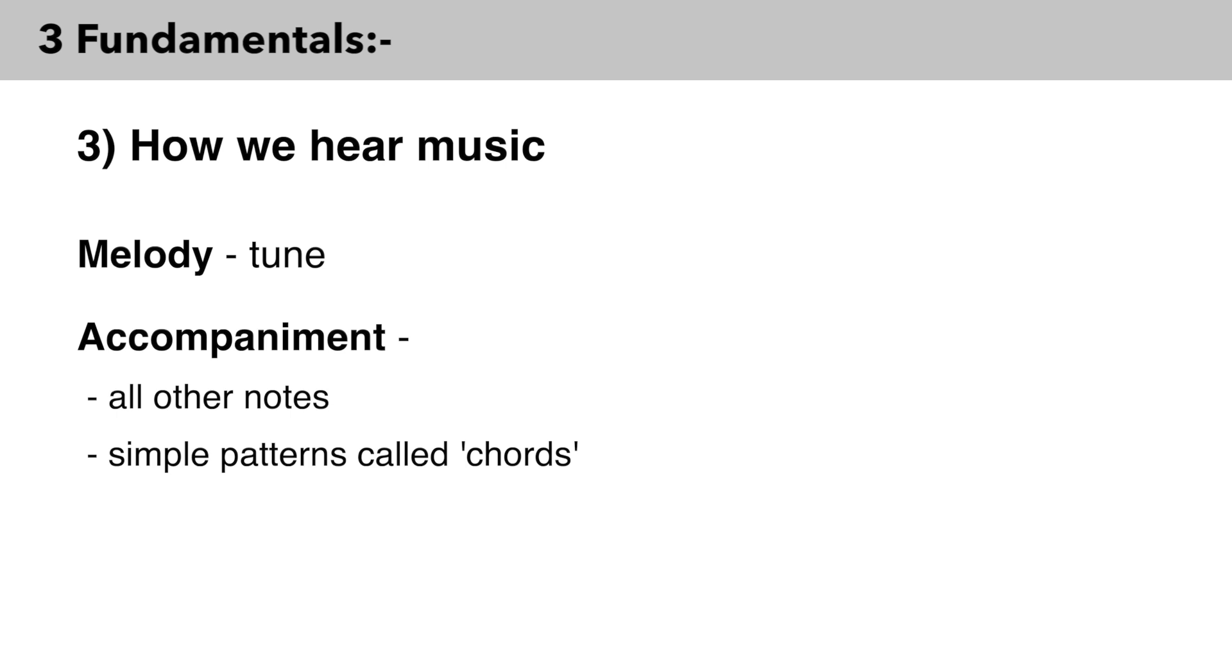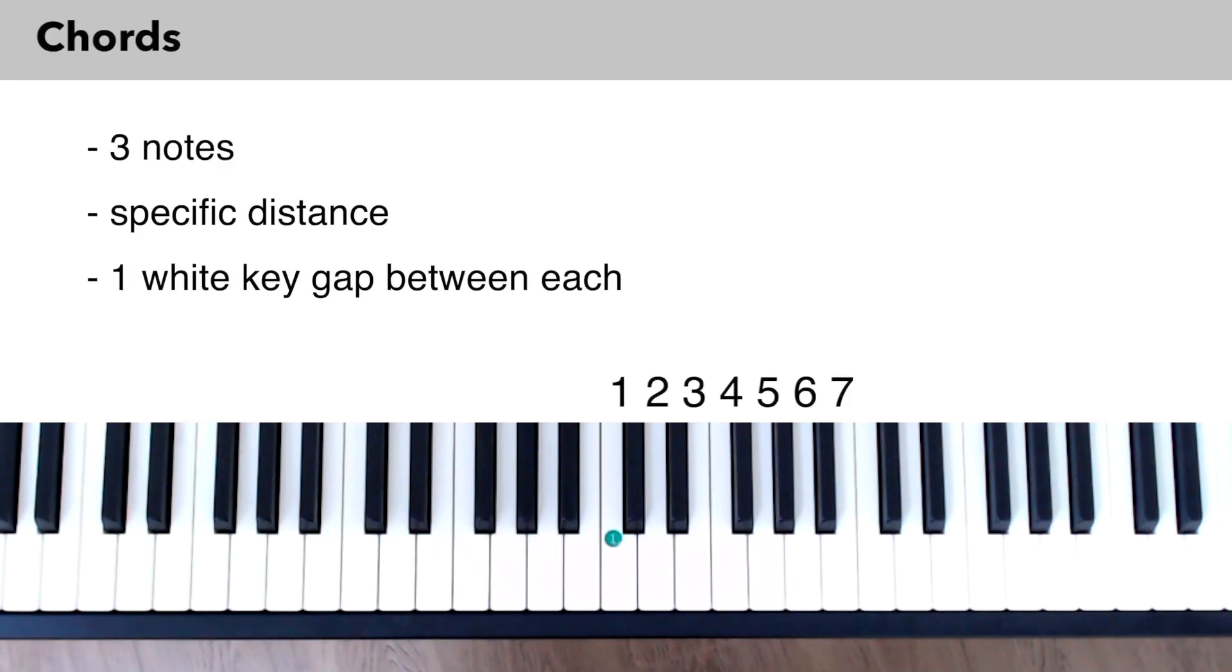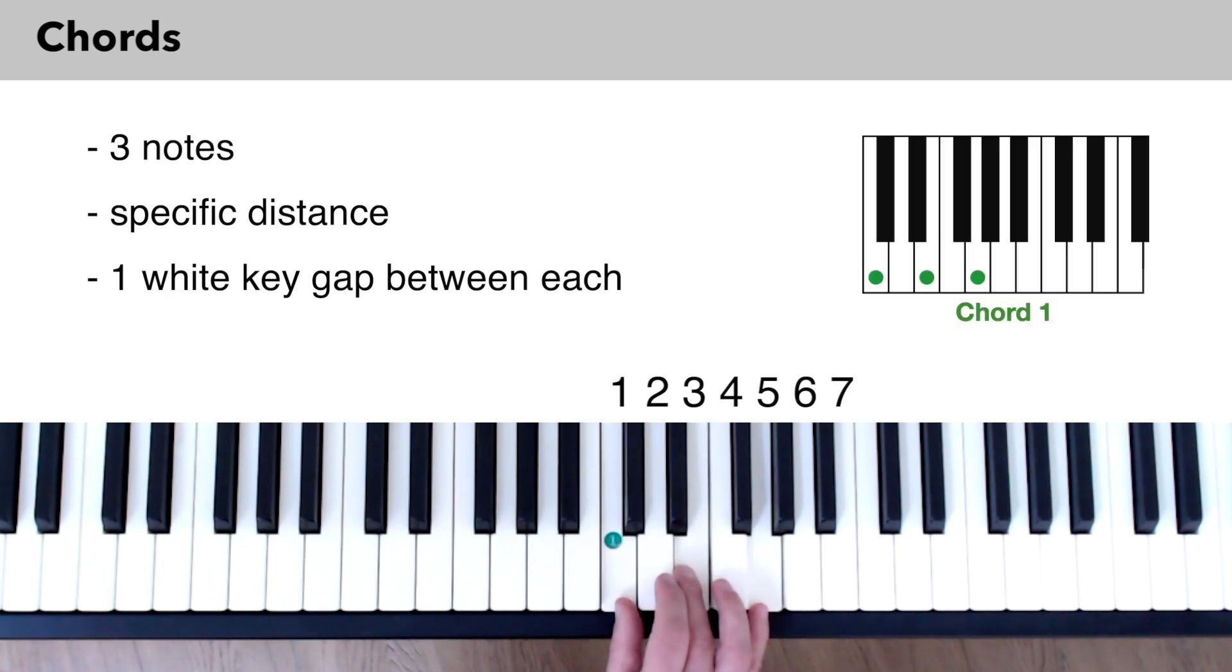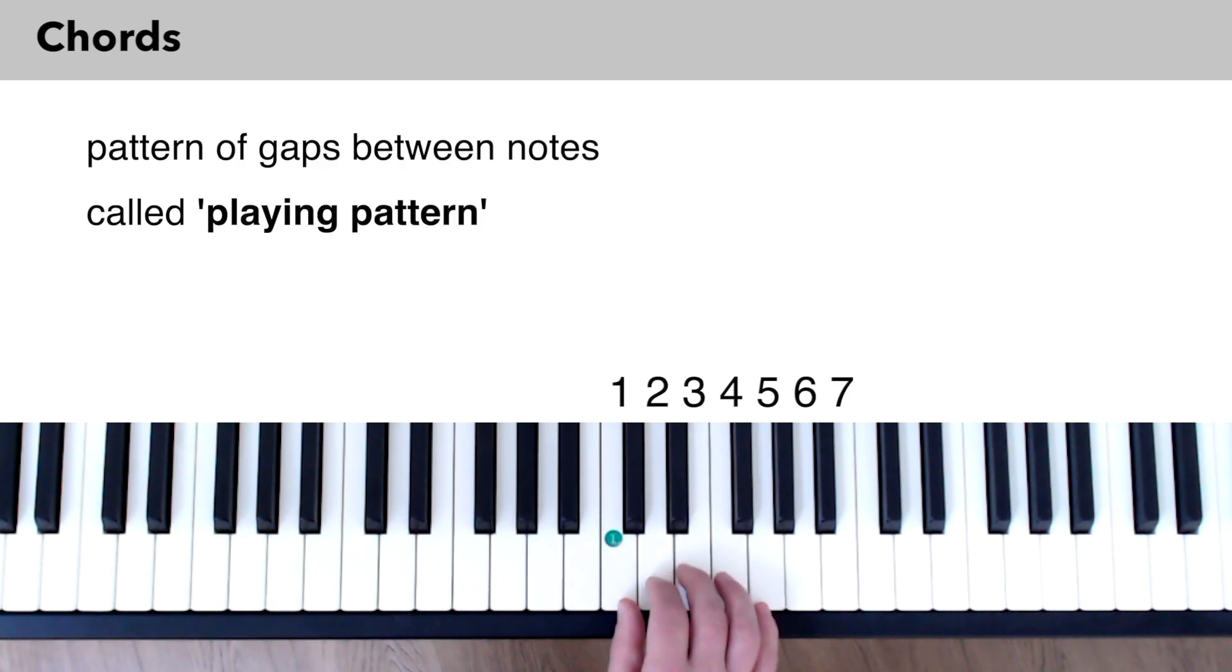Playing music by using these chord patterns is the key to making songs easy on piano, which is why it's the method favored by pop stars. An easy way to think of chords is three notes that sound good together and have a specific distance between them. A simple way to play chords is to play the first, third, and fifth white key from your starting point. So you have a gap of one white key in between each of the keys played. I call the pattern of gaps between the notes a playing pattern.